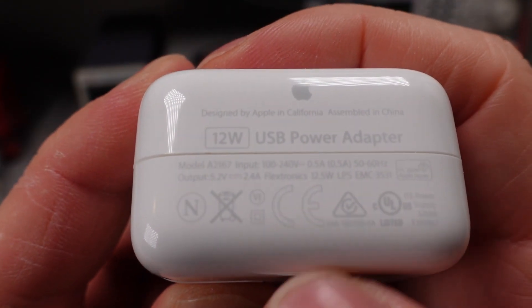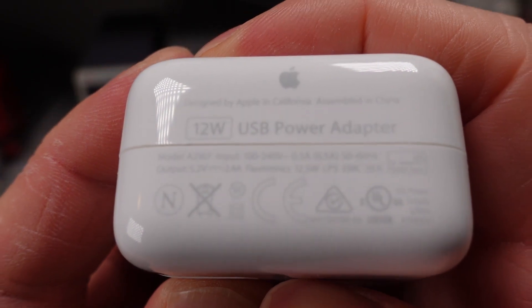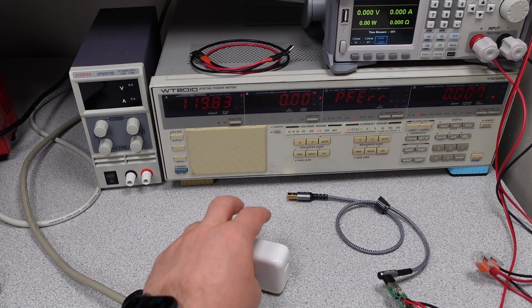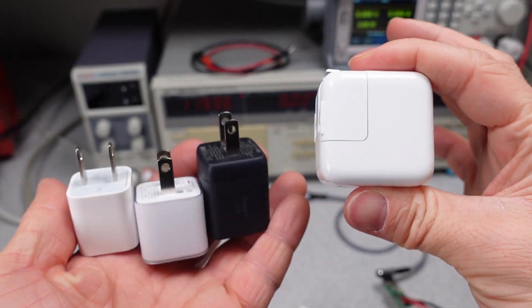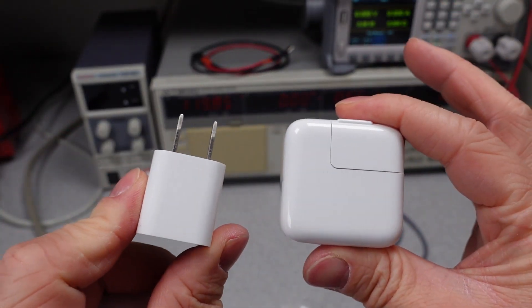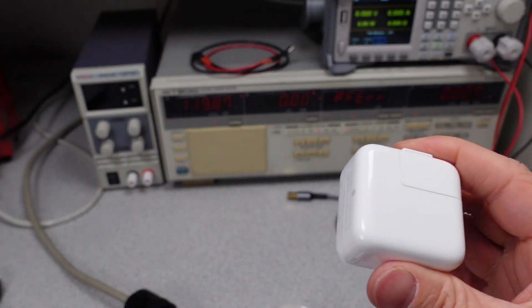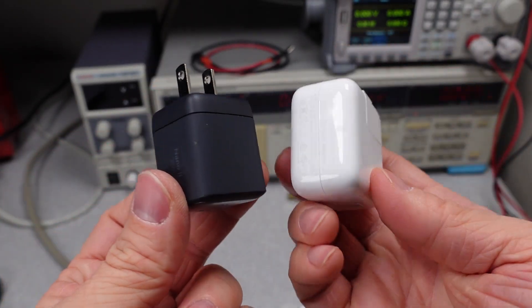And it tells you what it can do, but it's very hard to read. Just for comparison size, I brought in a couple other adapters. So you can see this is a 12 watt adapter from Apple, 5 watt adapter from Apple, 20 watt adapter from Anker, and a 30 watt adapter from Anker.